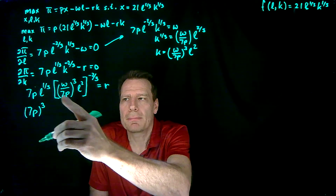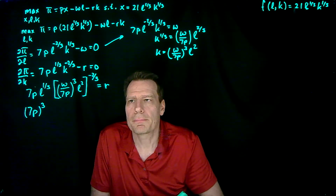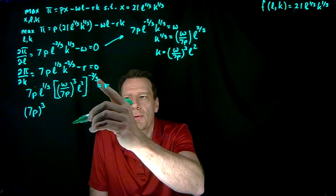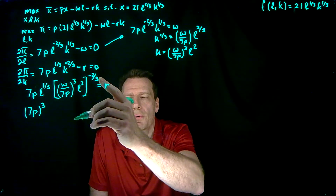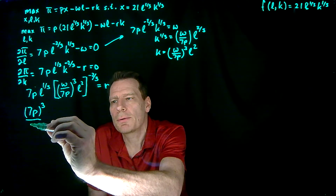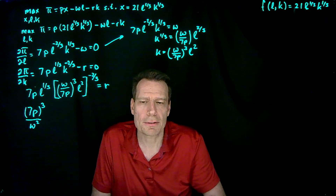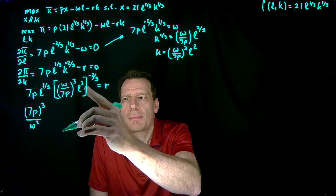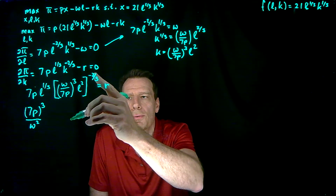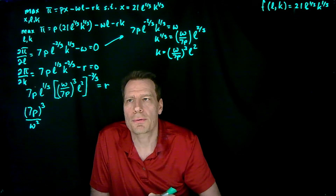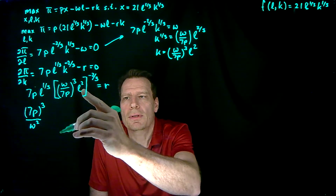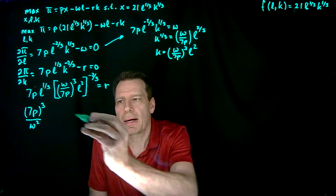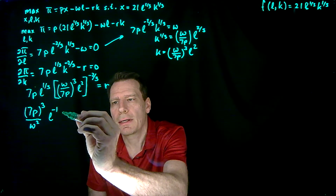For W: we have W to the third taken to the minus two-thirds — three times minus two-thirds gives minus two — so we get W squared on the bottom. For L: we have L to the one-third here and L squared taken to the minus two-thirds. Two times minus two-thirds gives minus four-thirds. So L to the one-third times L to the minus four-thirds — subtracting exponents gives one-third minus four-thirds — leaves us with L to the minus one. That equals R.